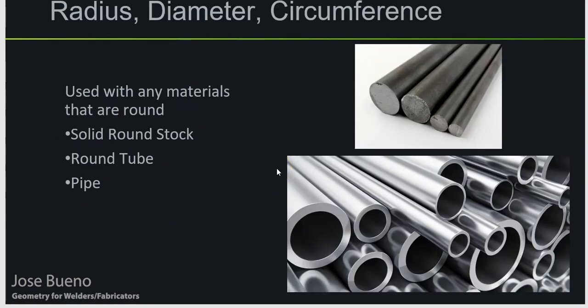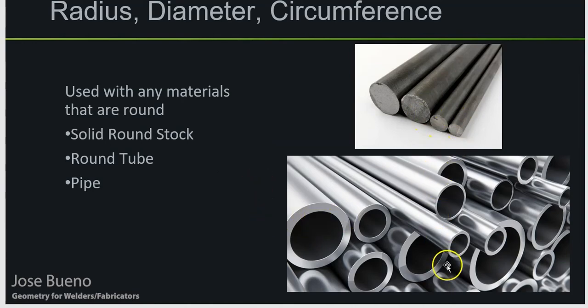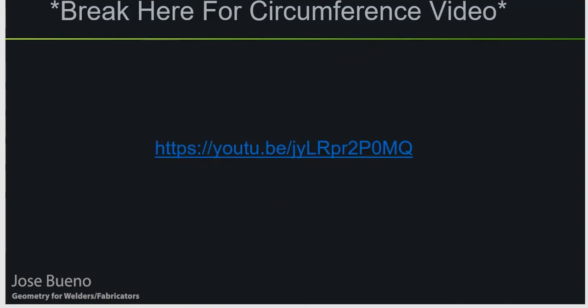Let's get into radius, diameter, and circumference. Like I mentioned earlier, we're going to be using this any time we're dealing with round stock, round tube, or pipe. There is a difference between round tube and pipe — pipe typically has a thicker wall, whereas tube has a thinner wall. We'll get into all the differences at a later time.